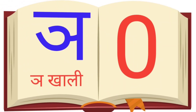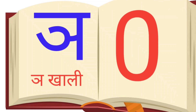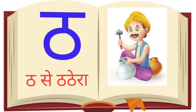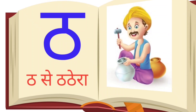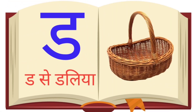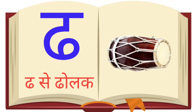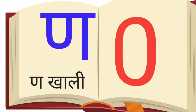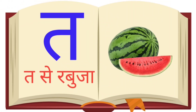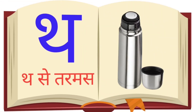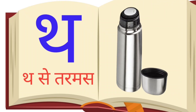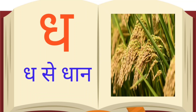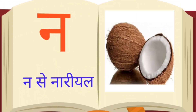ક સે કબુતર, ખ સે ખર્ગોસ, ગ સે ગારી, ઘ સે ઘારી. ચ સે ચમચ, છ સે છાતા, જ સે જહાજ. ટ સે ટમાટર, ઠ સે ઠેલા, ડ સે ડાળી, ઢ સે ઢોલક.